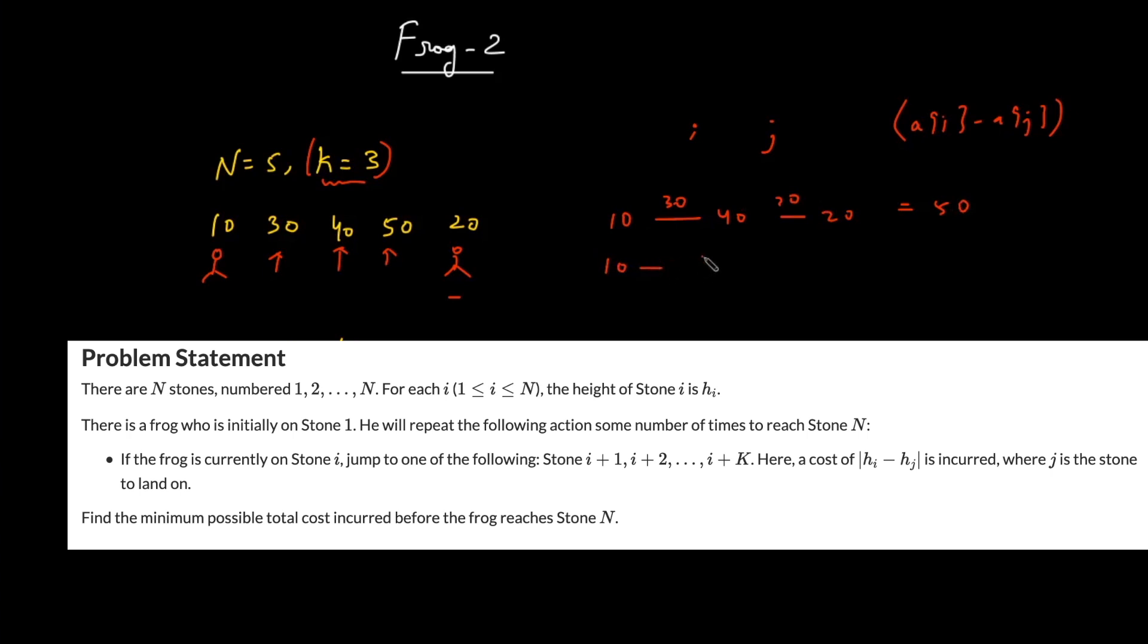Let's say from 10, you move to 30 and then from 30, you move to 20. 10 to 30 is possible because that's at a distance of 1, and 30 to 20 is again possible because that is at a distance of 2. So the cost taken over here will be 20 and the cost taken over here will be 10. So the total cost is nothing but 30.